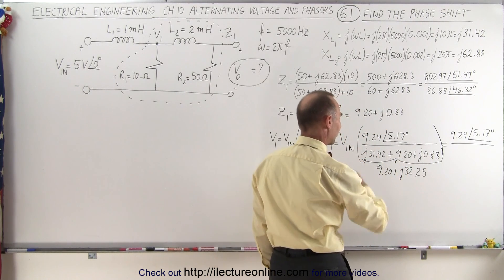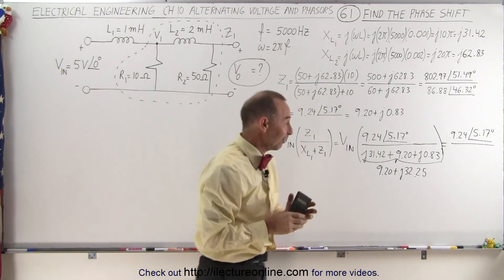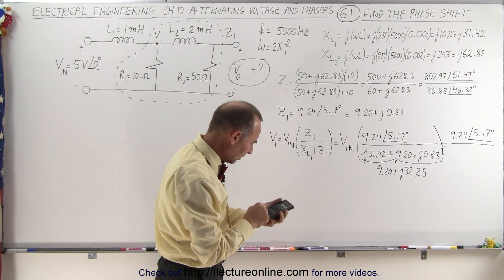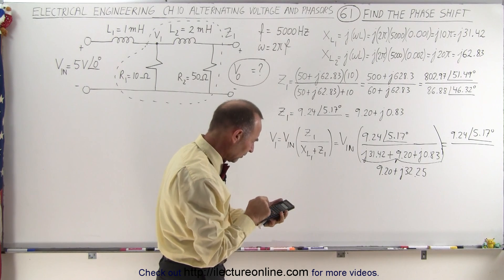Now we can put into magnitude and angle format. 9.2 squared plus 32.25 squared, take the square root of that. That gives us 33.54 in the denominator.